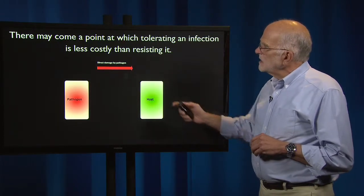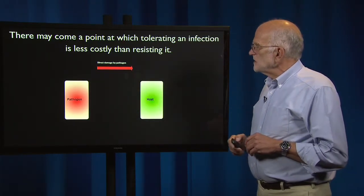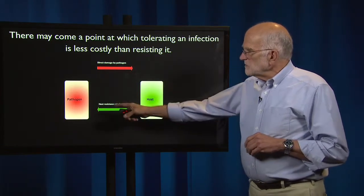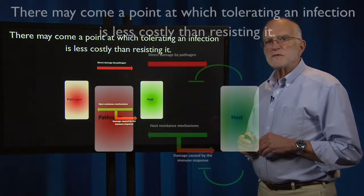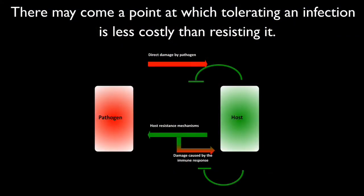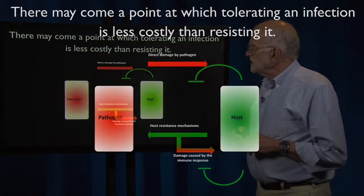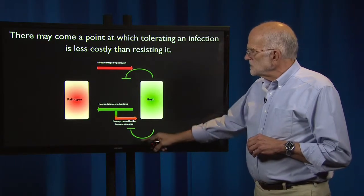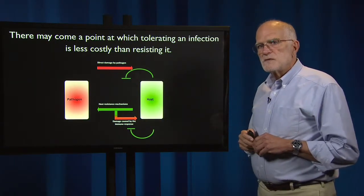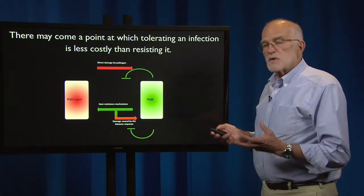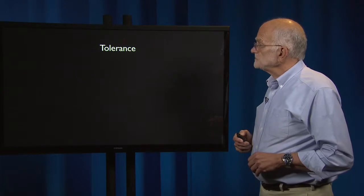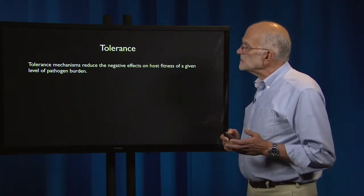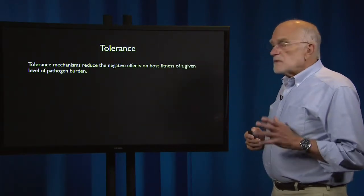There may come a point at which tolerating an infection is less costly than resisting it. Consider a host and a pathogen: there can be direct damage caused by the pathogen, there can be resistance to the pathogen, but there can also be damage caused by the immune response. The host can try to block the direct damage by the pathogen and also try to decrease the damage caused by the immune response.